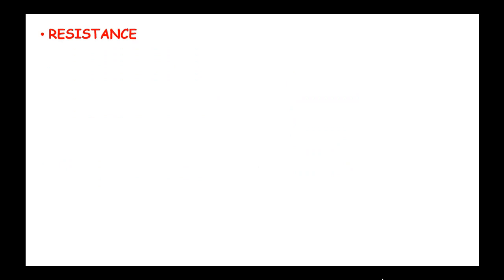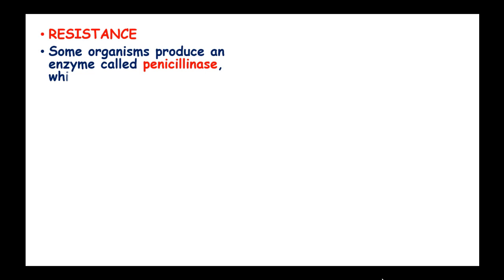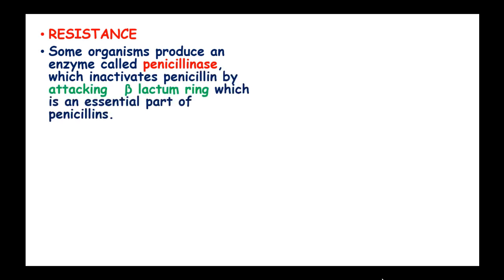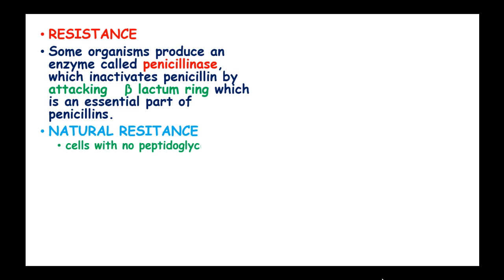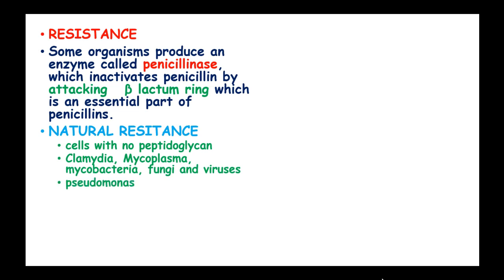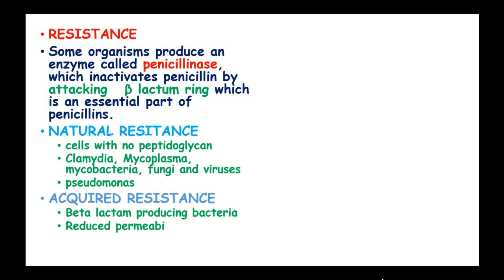Resistance to penicillins: Some organisms produce an enzyme called penicillinase which inactivates penicillin by attacking the beta-lactam ring, which is an essential part of the penicillin. Natural resistance is found in organisms with no peptidoglycan, such as Chlamydia, Mycoplasma, Mycobacteria, Fungi, Viruses and Pseudomonas. Acquired resistance is found in organisms which produce beta-lactamases and have reduced permeability to penicillins.